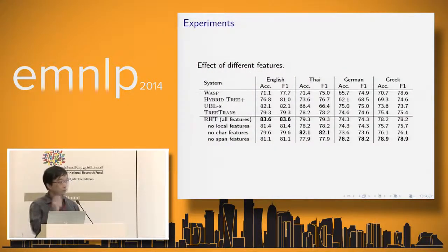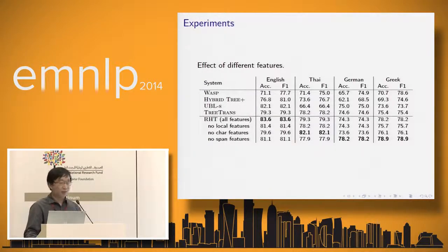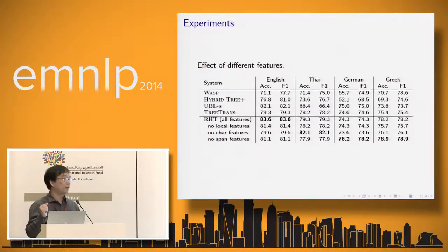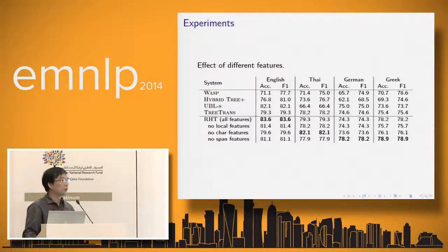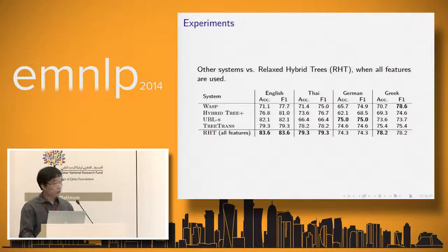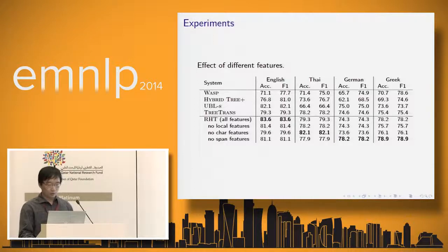Audience question: In the table, is the hybrid tree plus a discriminative or generative model? Response: It's a mixture of both — we start with a generative model and then generate candidates for re-ranking. Audience follow-up: Is that the same as what happens in the relaxed hybrid tree? No. Did you try a fully discriminative model for the hybrid tree? That would correspond to using no span features in our table. Okay, makes sense. Thanks.